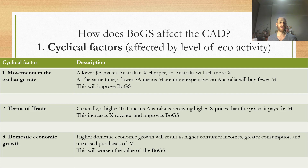For each of these situations, it would be useful to pause this video and work through the opposite scenario. For example, for cyclical factor number one, what would happen if the Australian dollar appreciated or went up in value?